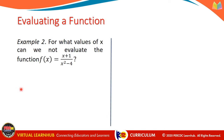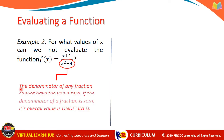Example number 2. For what values of x can we not evaluate the function f of x equals x plus 1 over x squared minus 4? To answer this, we should note that the denominator of any fraction cannot have the value 0. If the denominator of a fraction is 0, its overall value is undefined.